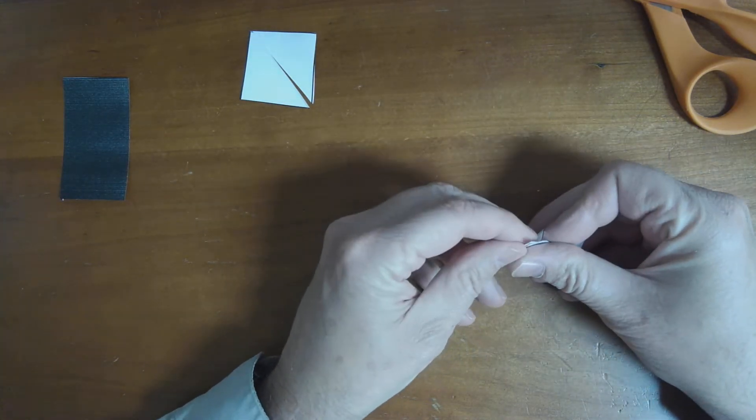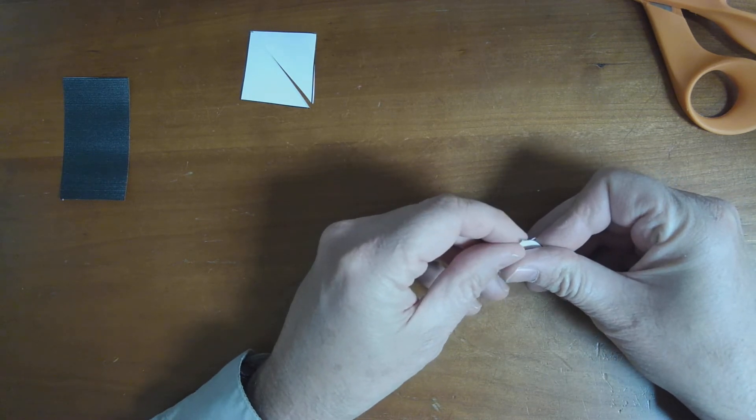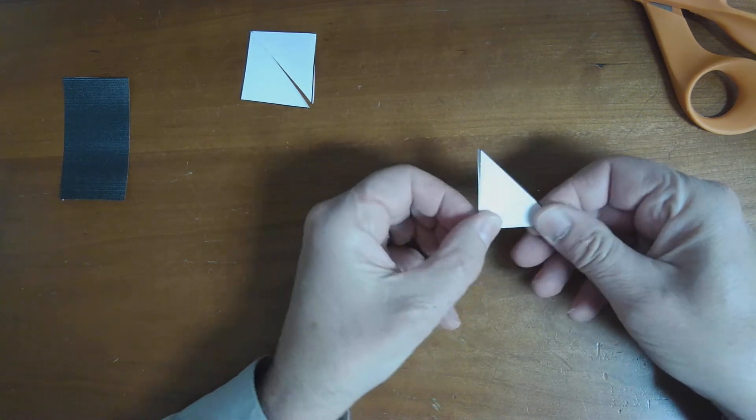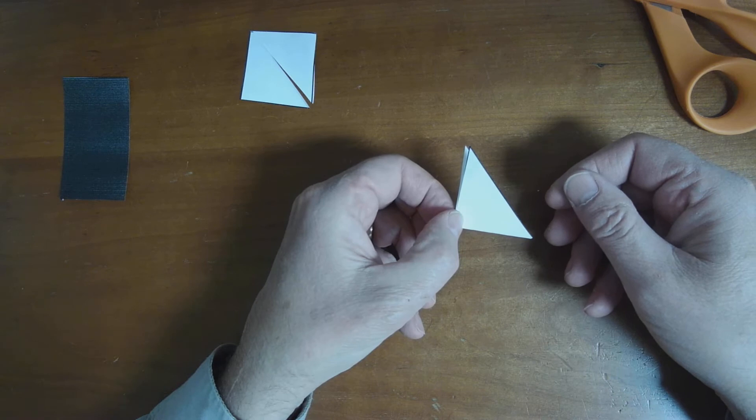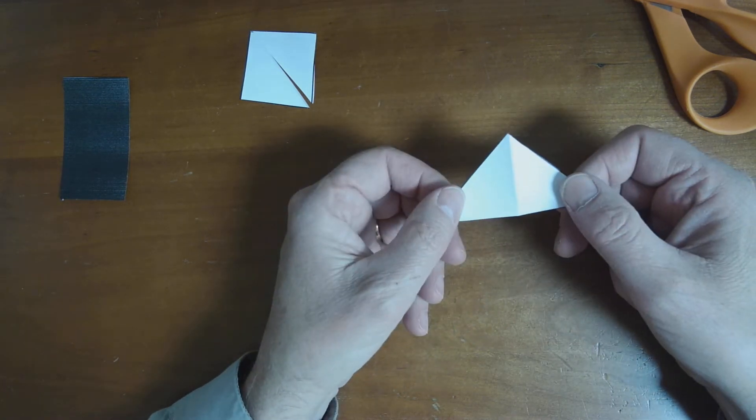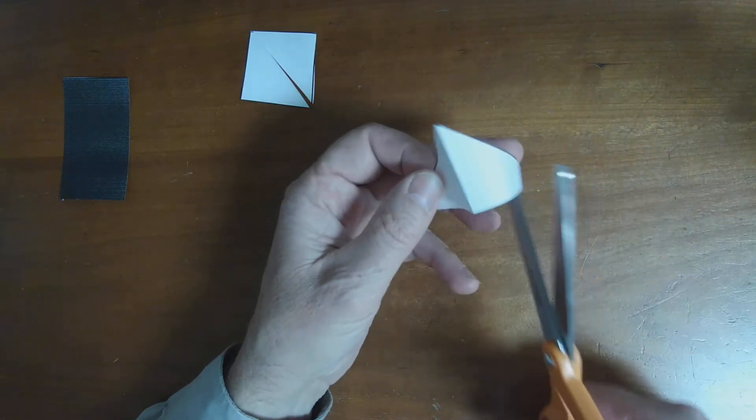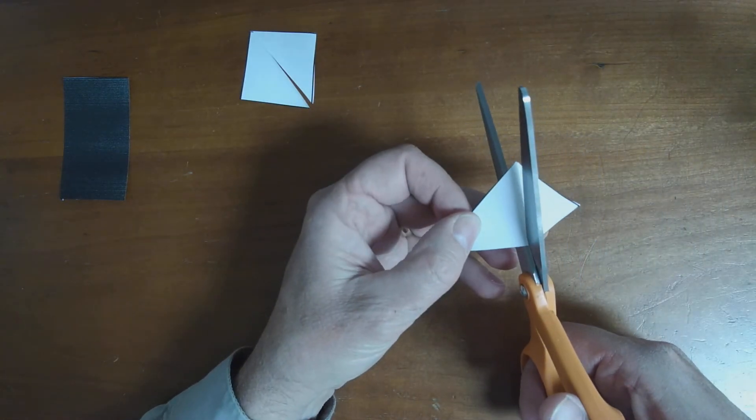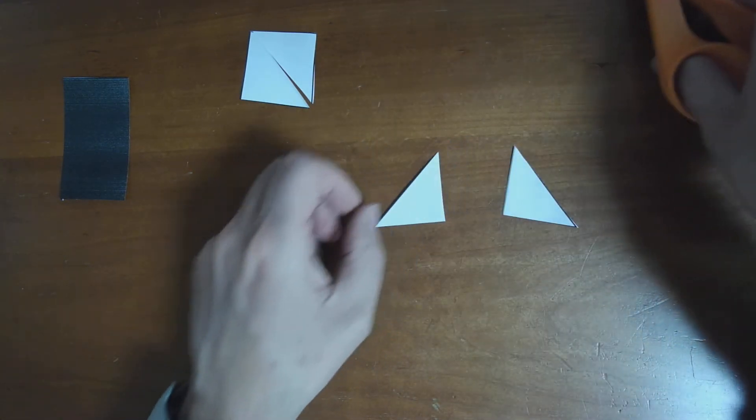Take the two corners, fold them together. Look what we have. We have two triangles. Let's cut this. And there we have two triangles.